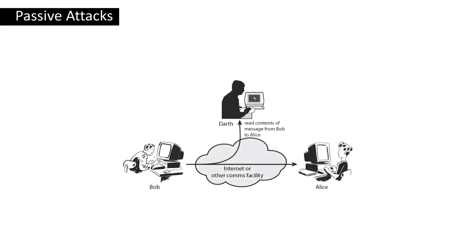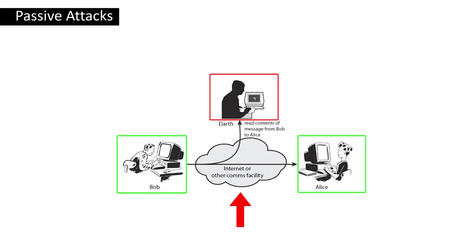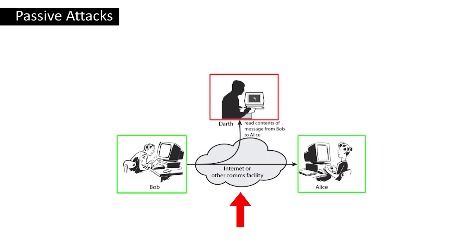Next come passive attacks. Using wire tapping or other similar methods, an unauthorized attacker spies to steal system information during the communication process between two parties. This is different from an active attack as it does not interfere with any activities with databases or servers, but may still be considered a criminal offense.